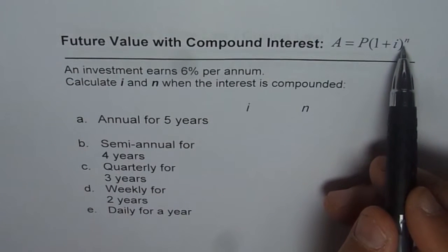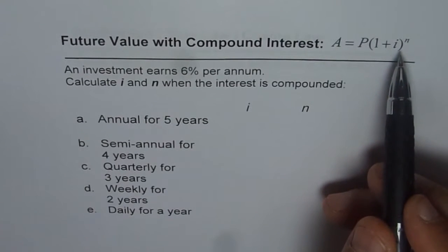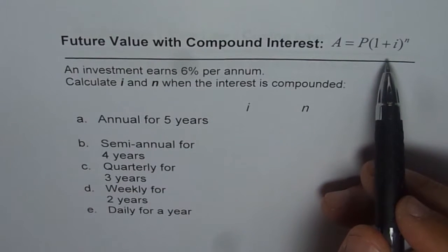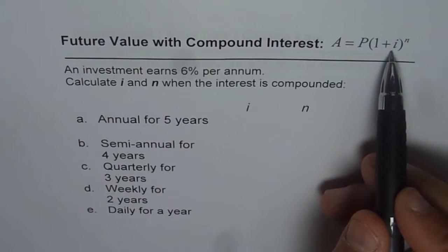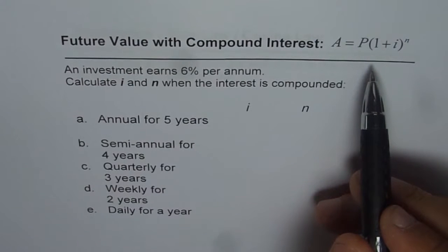Number of compounding periods will really depend on the type of compounding. If the compounding is quarterly then there will be 4 in a year. If there are 5 years then 4 times 5, and i, the interest during the compounding period, will be also calculated because normally you are given interest per annum.